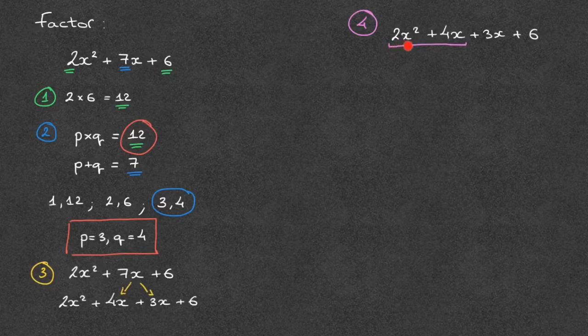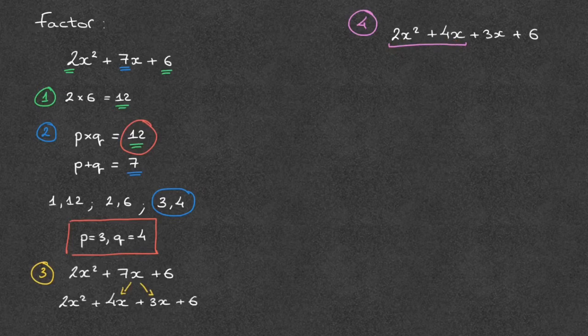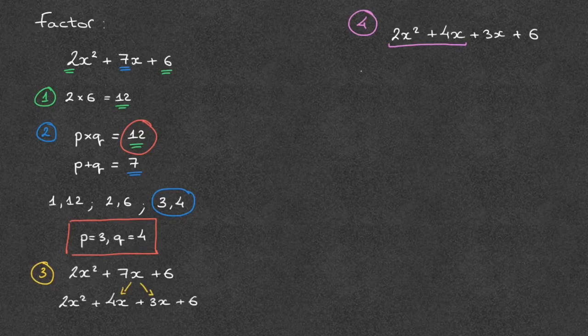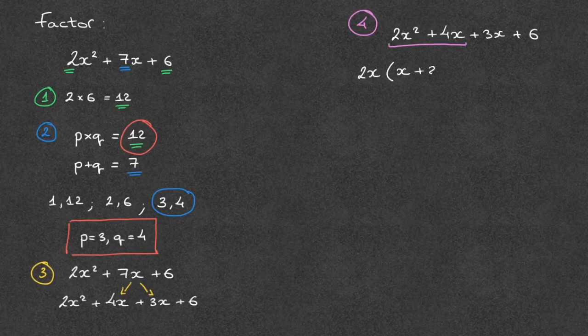Looking at 2x squared and 4x, their highest common factor is 2x. So in factored form, those first two terms would be 2x in parentheses x plus 2.